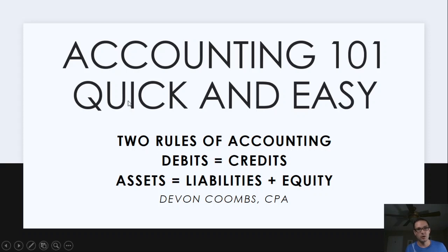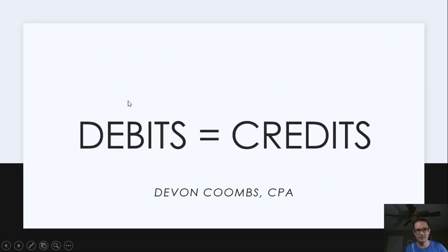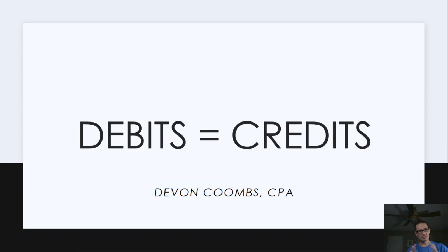So what are the two basic rules of accounting? We need to have debits equal credits, and assets equal liabilities plus equity. Let's just talk about debits equal credits right now.